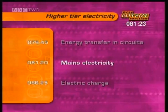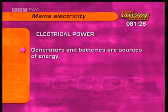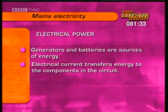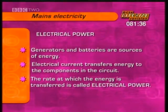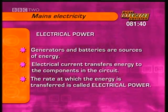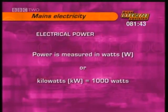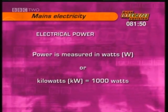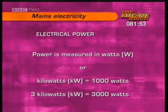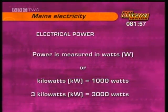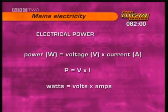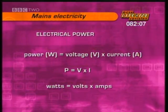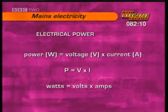Next, more about mains electricity. Generators and batteries are sources of energy, and electrical current transfers that energy from the source to the components in a circuit. The rate at which energy is transferred to a circuit is called electrical power. Power is measured in watts or kilowatts — that's a thousand watts. Power in watts equals voltage in volts times current in amps, or P equals V times I. Just like Ohm's law, if you know any two of these, you can work out the third.